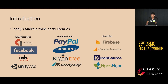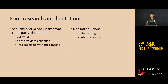Today's mobile apps increasingly rely on third-party libraries to provide essential functionalities like advertisement, analytics, and in-app payment. However, integration of libraries from less reliable sources could bring in security and privacy risks. Previous studies have investigated different types of malicious activities in third-party libraries such as ad fraud, harvesting sensitive user data, and tracking users without consent. The natural solution to mitigate such security risks always includes static vetting of library code and runtime inspection of its behavior.